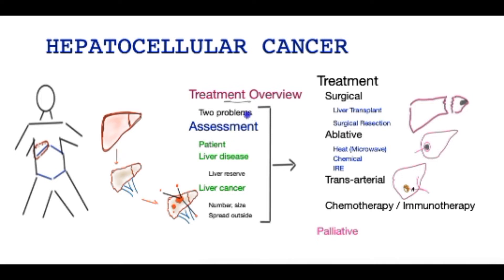Before we get into that, we have to realize that liver cancer usually presents two serious problems. The first is the underlying liver disease, which in its own right can be life-threatening, and the second is the liver cancer itself. Before any treatment can be suggested, it is really important to assess the patient on three fronts: patient fitness, whether they have any comorbidity, their physical fitness state, and the patient's preference for treatment options.